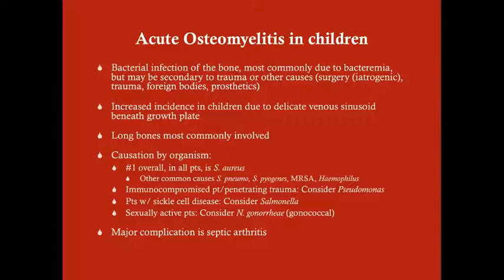When bacteria proliferates in that sinusoid, it's in direct contact with the bone, and at that point you can get osteomyelitis. The bacteremia is the ultimate cause, but the venous sinusoid underneath the growth plate is what makes children at a higher risk for osteomyelitis than adults.